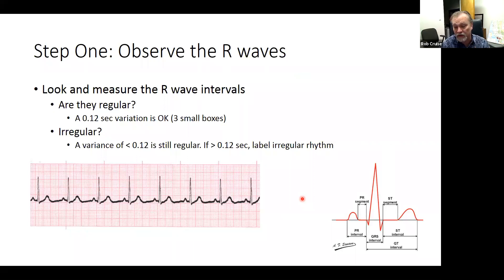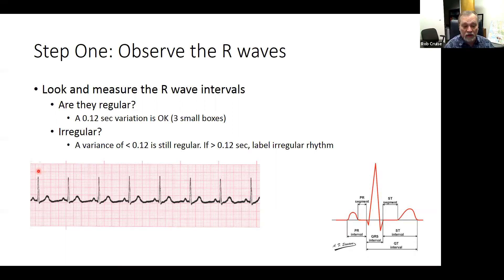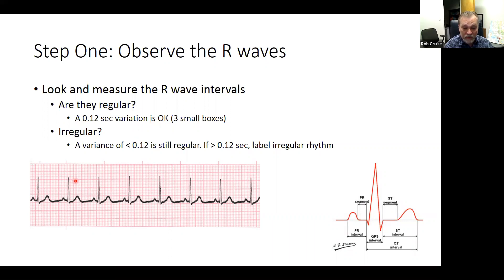There's a five-step process. We're going to take a look at the process first and then see how that applies to a rhythm strip. Step one: observe the R waves. We're not counting anything yet — just looking to see if they appear fairly even. Next, use a caliper or index card to mark the time intervals between each R wave to see if they are regular or not. Regular means a 0.12 second or less variation. If they differ by greater than three small boxes, it's called an irregular rhythm.